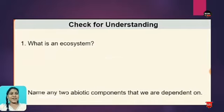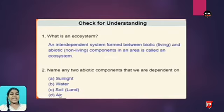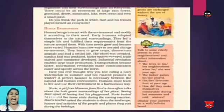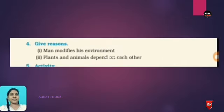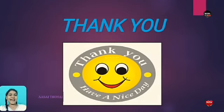Now check for understanding: What is an ecosystem? Name any two abiotic components that we all depend on. Check your answers. Now take your NCERT book, read the section on human environment, and go to page number six to answer the 'Give Reasons' questions. What we learned today: ecosystem. Thank you, have a nice day — bye, happy learning!